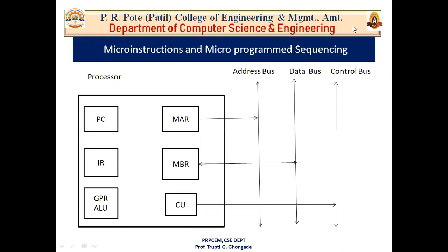We know that a program is a set of instructions, and an instruction is a set of micro instructions. To perform micro operations on those micro instructions, we need to generate control signals in a proper sequence. The control unit is responsible for generating control signals. We had discussed all these terms in the previous lecture.